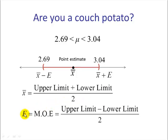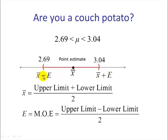Now if we want to find the margin of error E, we would take the upper limit and subtract the lower limit, then divide that by 2. Why does this formula work? If we take X-bar plus E and subtract X-bar minus E, the X-bars cancel, and we have E minus negative E, which gives us E plus E, or 2E. And 2E divided by 2 is E.